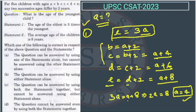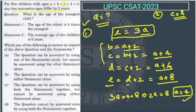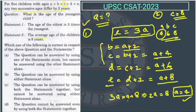Now let's check the second statement. The average age of the children is eight years. Average age means the middle age, which is the age of c, equals eight. We consider this because the differences are the same on both sides and the middle point is c — the average gives us the middle point itself. So if the age of c is eight, then b is six and a is four. From the second statement also we can infer the age of a.